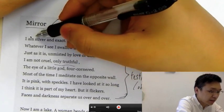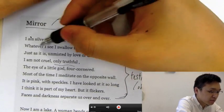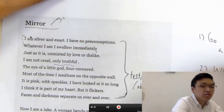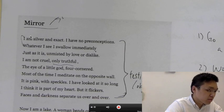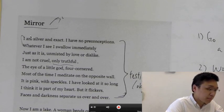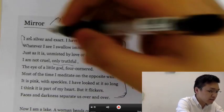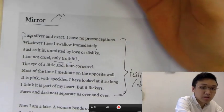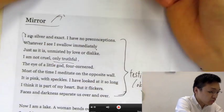The first two lines, I'm silver and exact. I have no preconceptions, whatever I see, I swallow immediately. So this is just describing a mirror. A mirror is neutral, and it reflects whatever image is shown. Just as it is, unmisted by love or dislike. So again, it's emphasizing the fact that the mirror is neutral and how it is very truthful. The eye of little god, four-cornered.